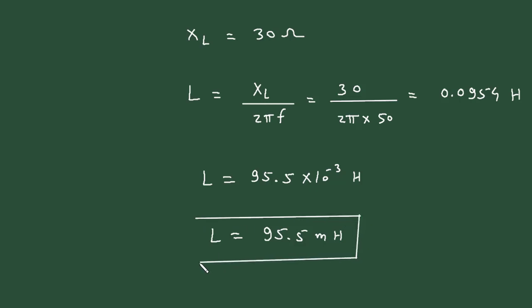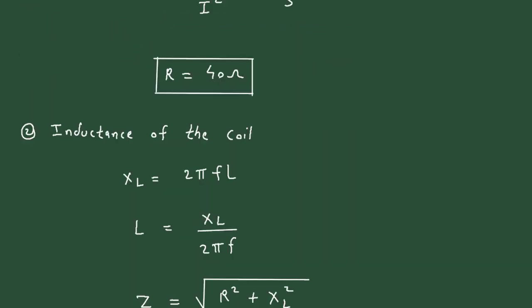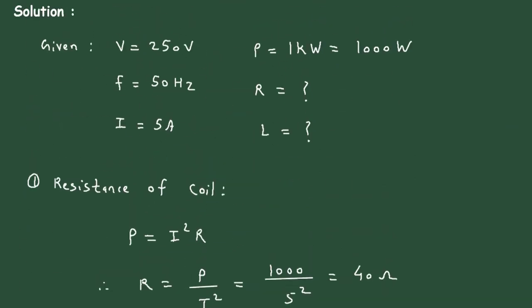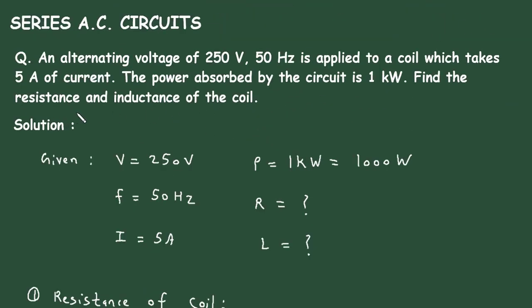So what we had to find in this question — resistance and inductance of the coil — we found resistance R is equal to 40 Ohm and inductance L is equal to 95.5mH. Visit the link in the description below, where you will find thousands of questions, answers, and videos related to electrical and electronics engineering.